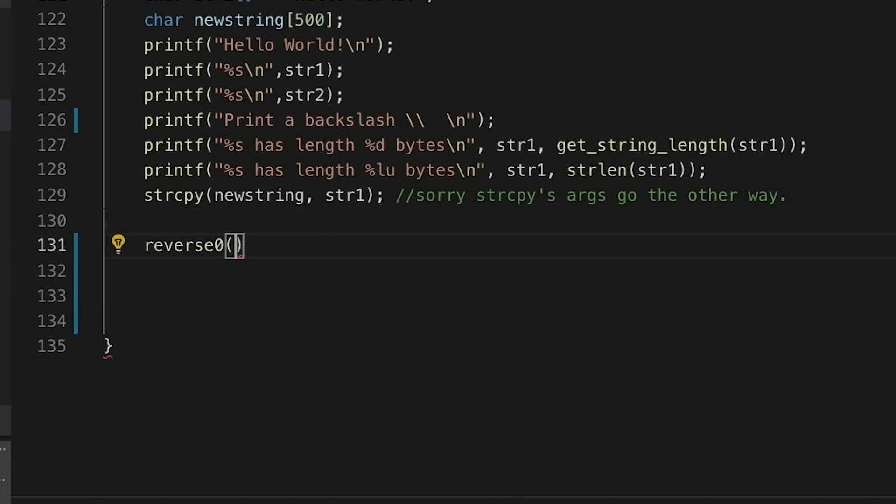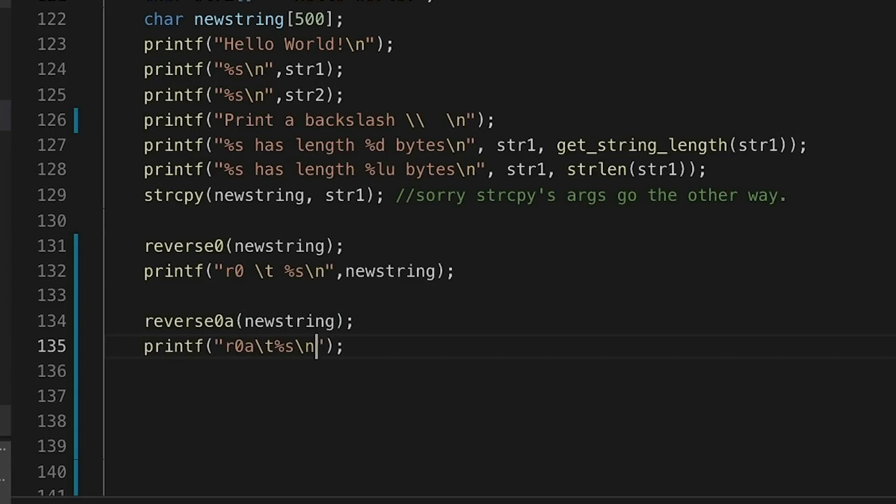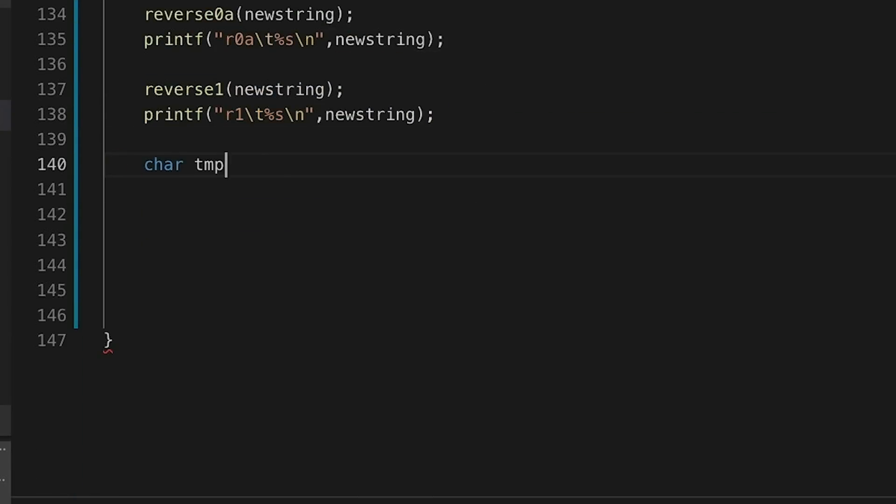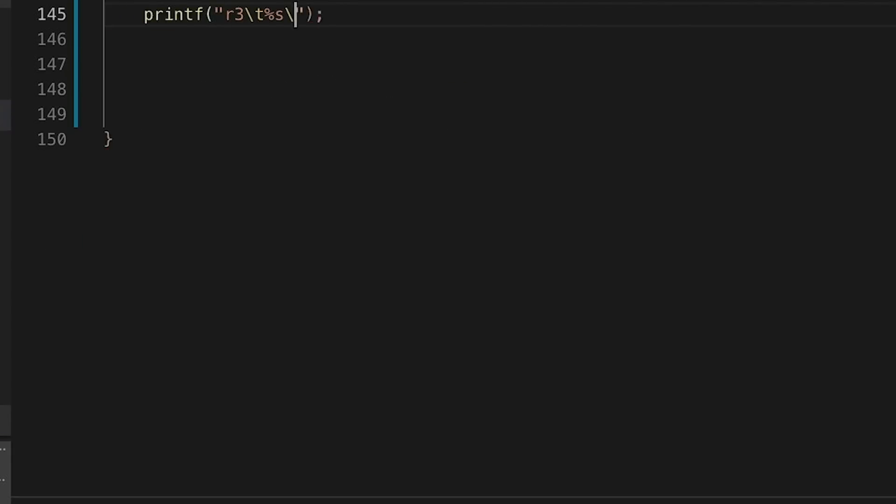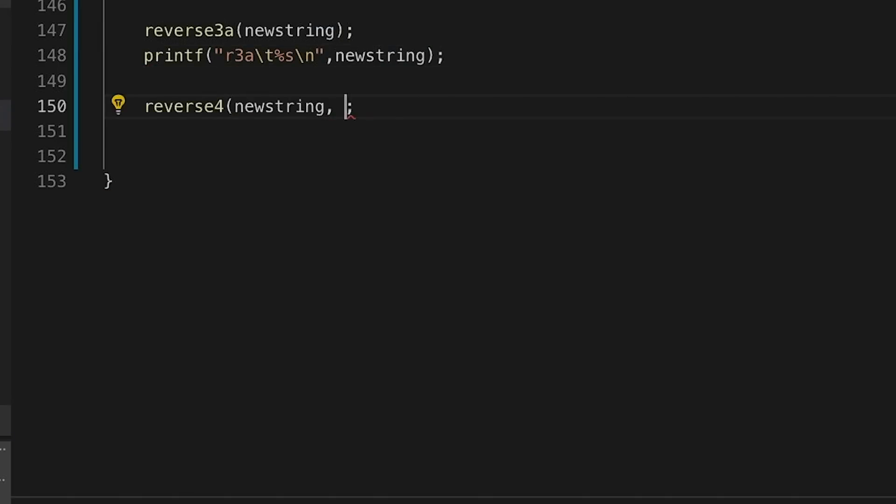Okay, so just to make sure that all this works, let's go down to main and actually run all these different versions we have. For the in-place examples, we'll just reverse new string and print it out, and we'll do this again and again, and we'll print it out, and okay. For reverse two, we need another string, so we'll reverse it, print it out, and now let's keep going with more in-place reversals.